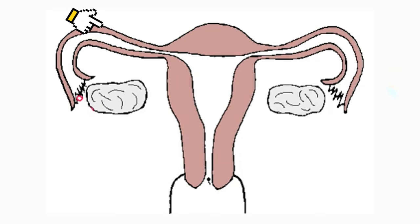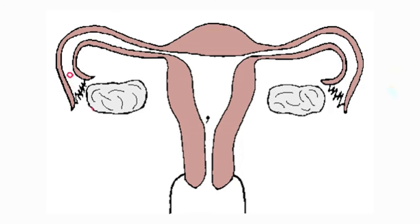The fallopian tube is where fertilization takes place. Once the egg has been fertilized, forming the zygote, it then moves towards the uterus where it implants, attaches, and grows to form the fetus. But in some cases, the fertilized egg continues to develop within the fallopian tube — it does not move to the uterus where it's supposed to be.